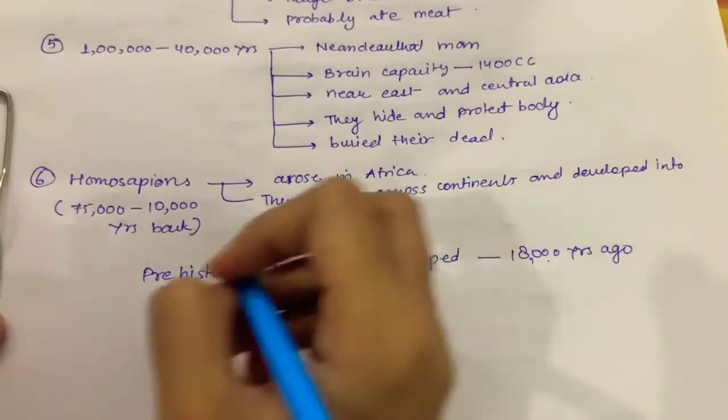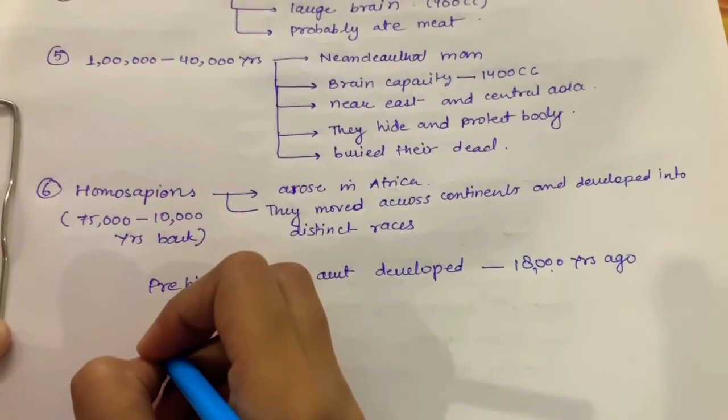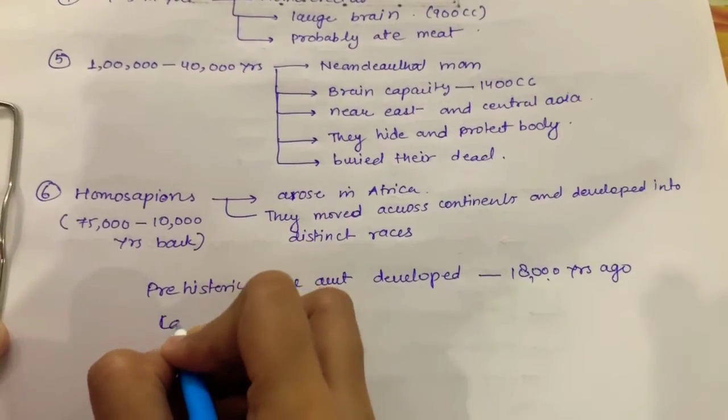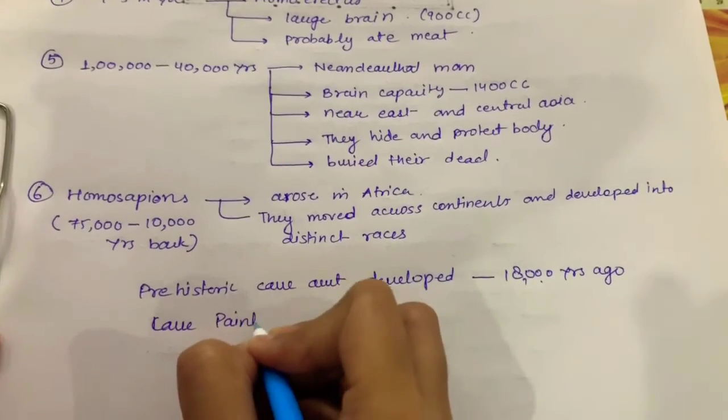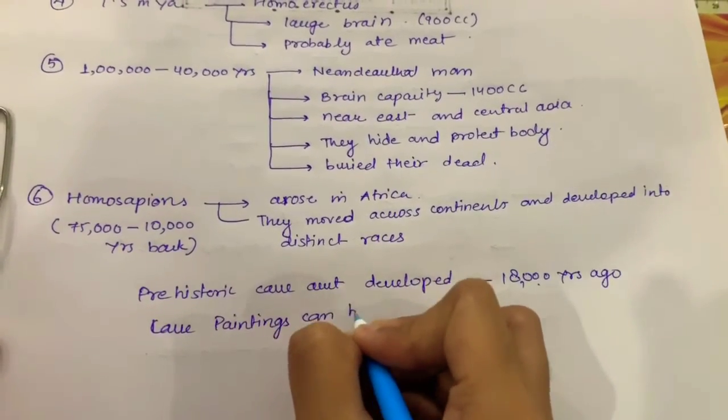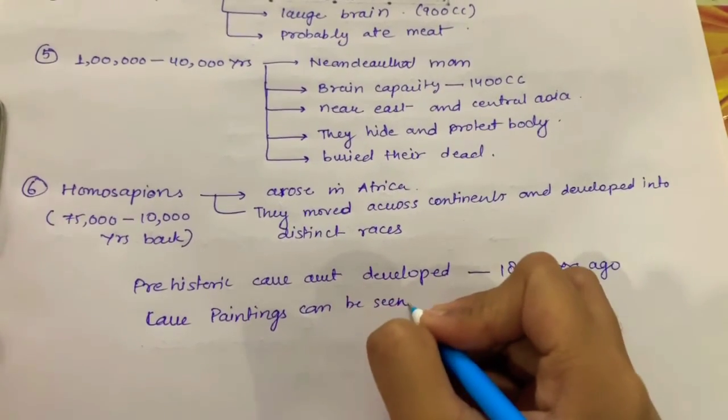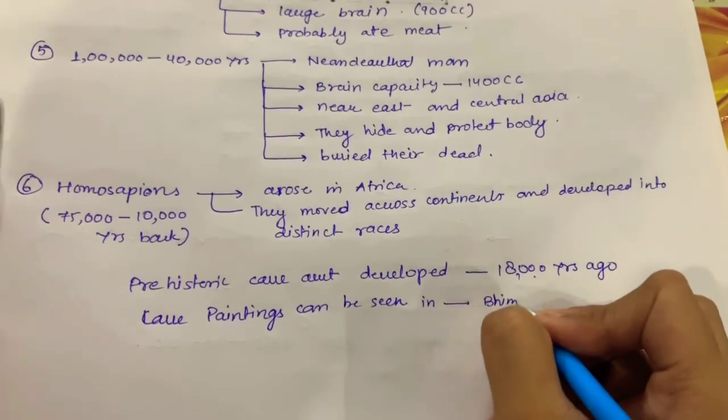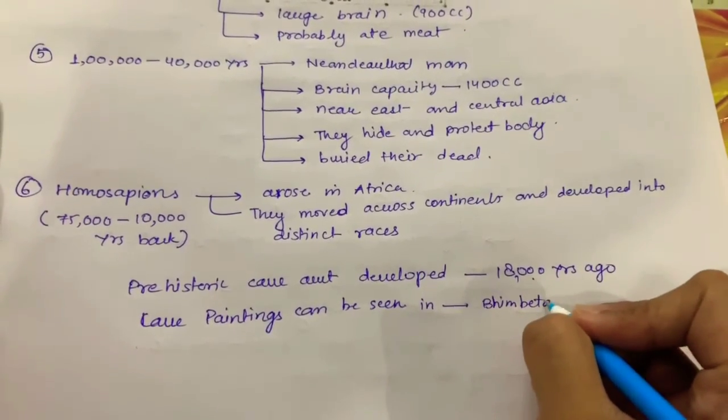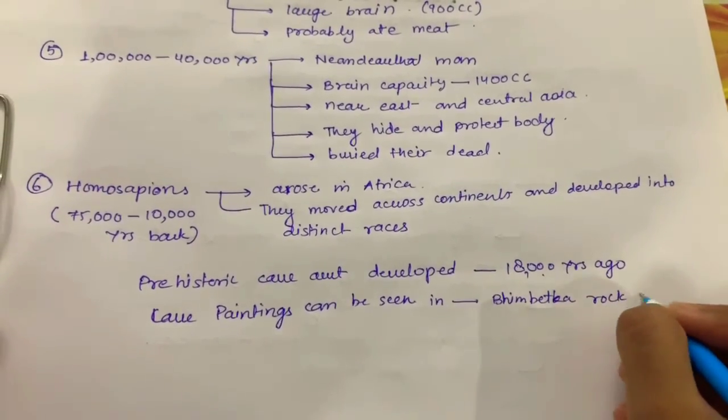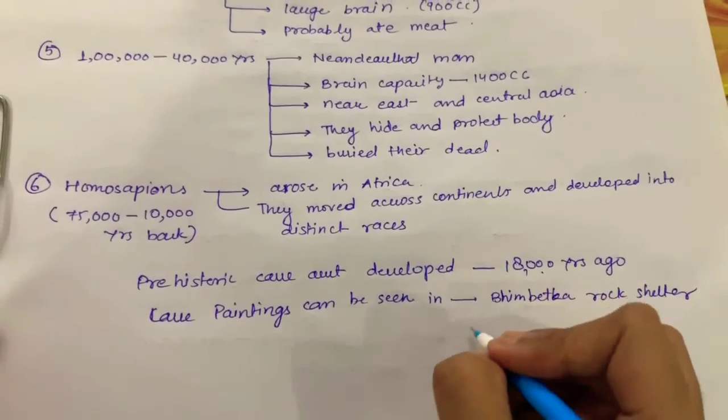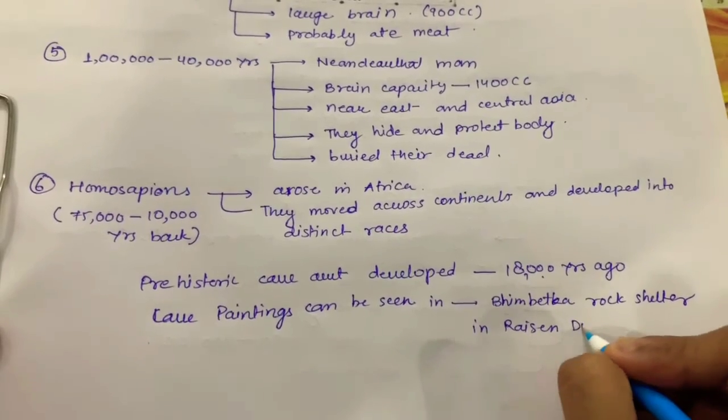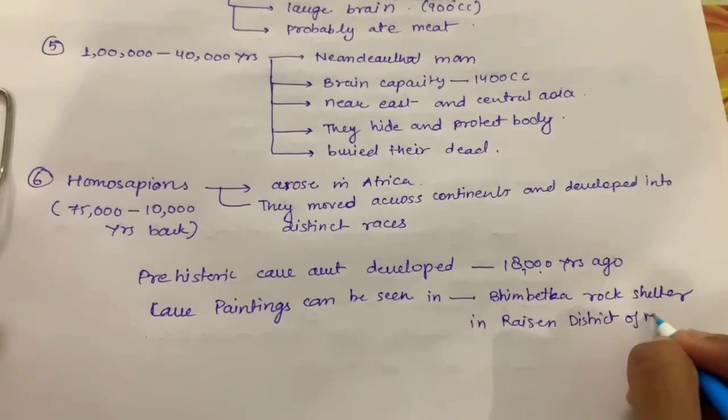Cave paintings by prehistoric humans can be seen in Bhimbetka rock shelter in Raisen district of Madhya Pradesh.